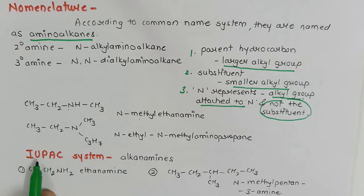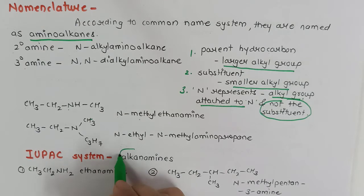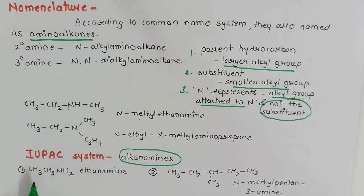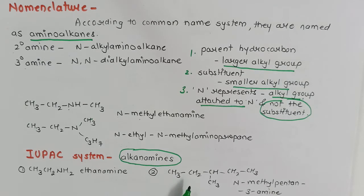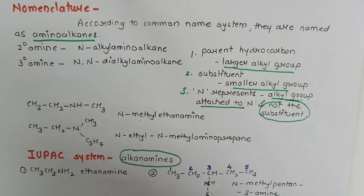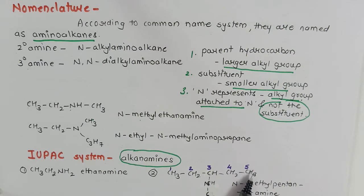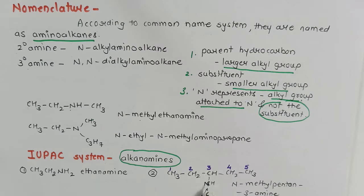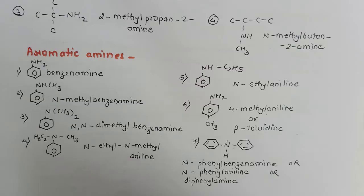According to the IUPAC system, amines are named as alkylamines — for example, ethanamine. By selecting the longest chain and numbering it, with a methyl group attached to nitrogen, the name becomes N-methyl-pentane-3-amine, as nitrogen is attached at position 3.